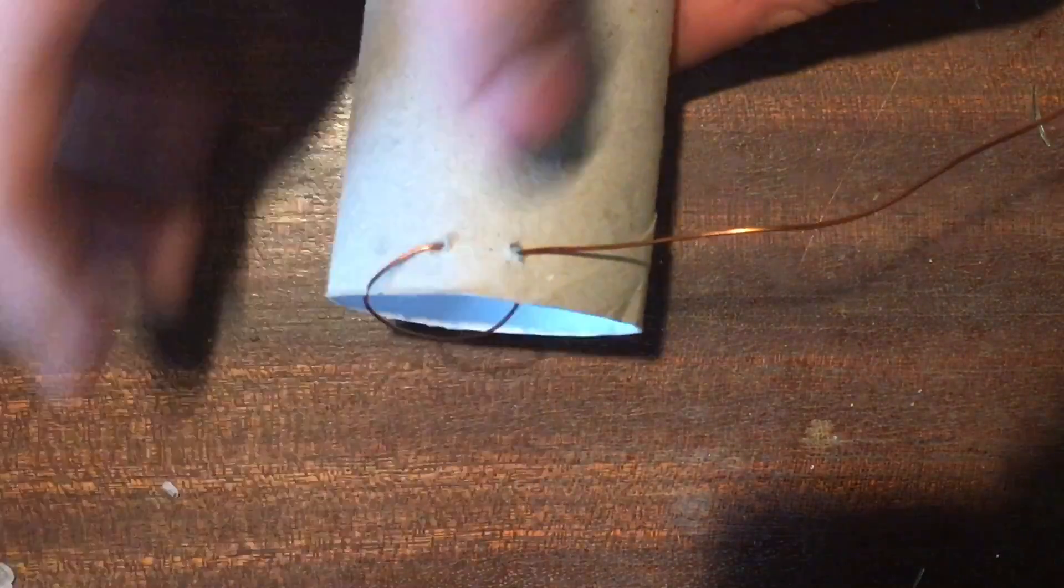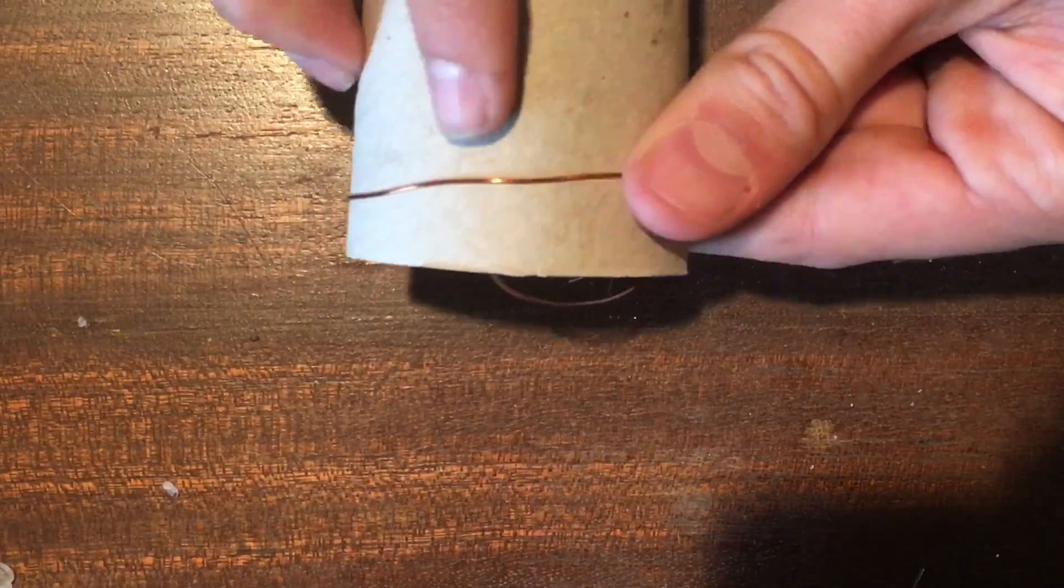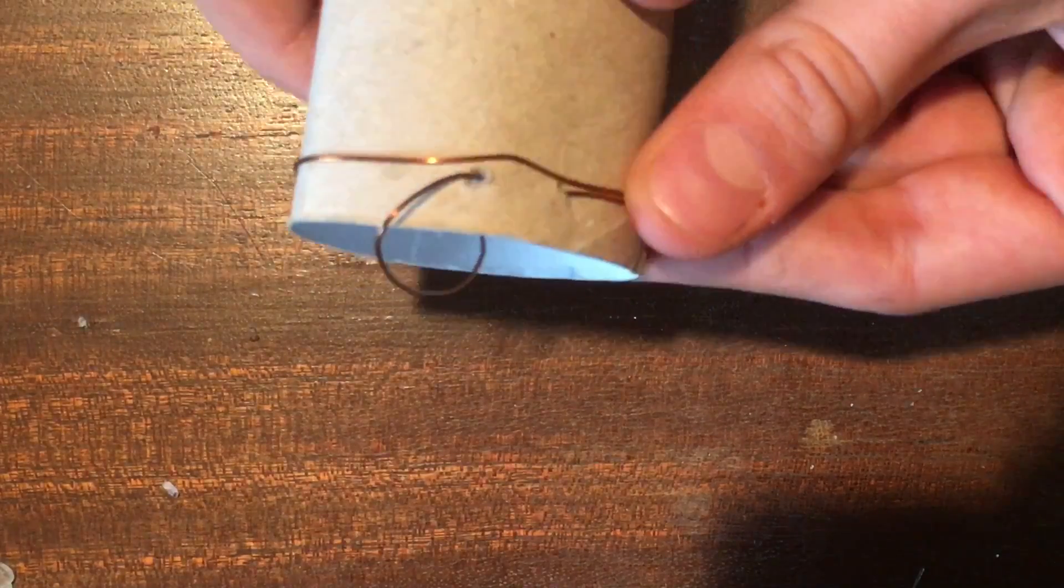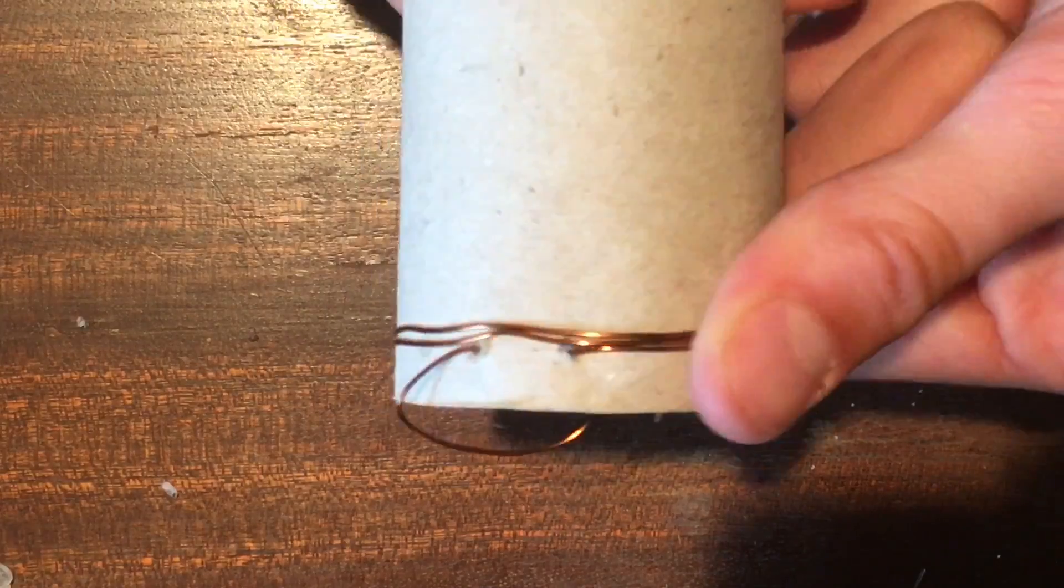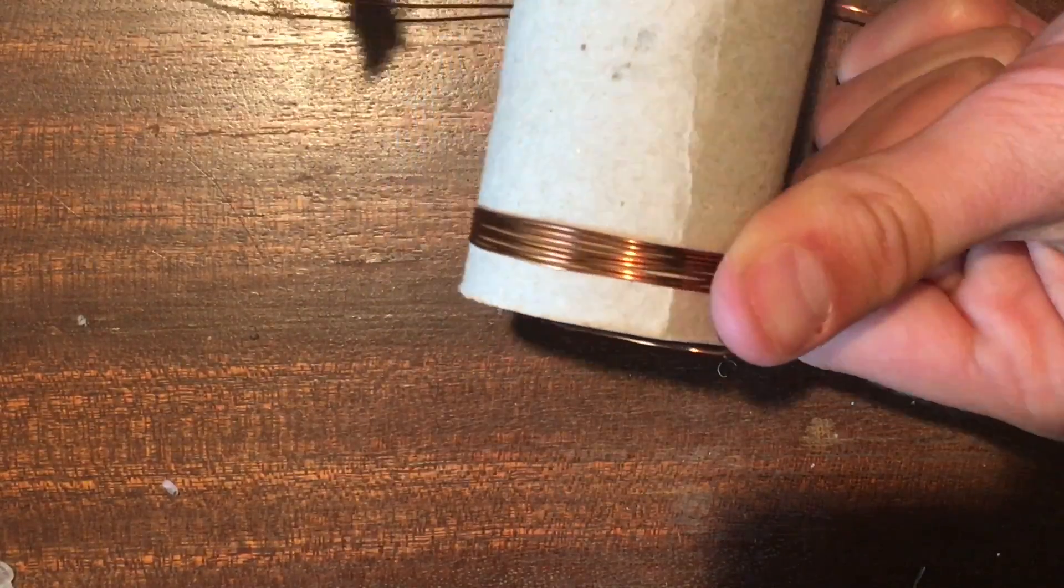Put the excess wire inside and start winding. Make sure that your windings are close together and are very tidy and as tight as you can make them. You need to do 300 winds.